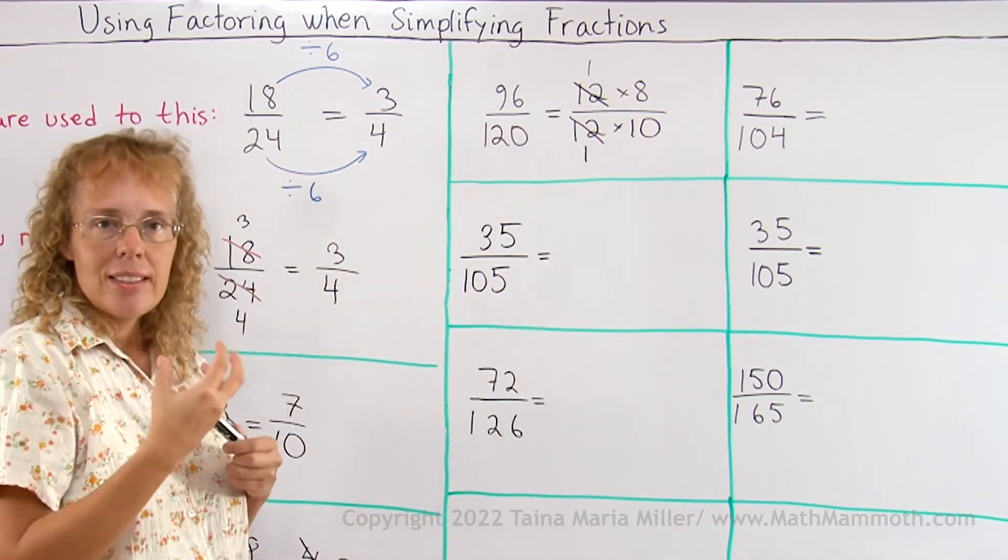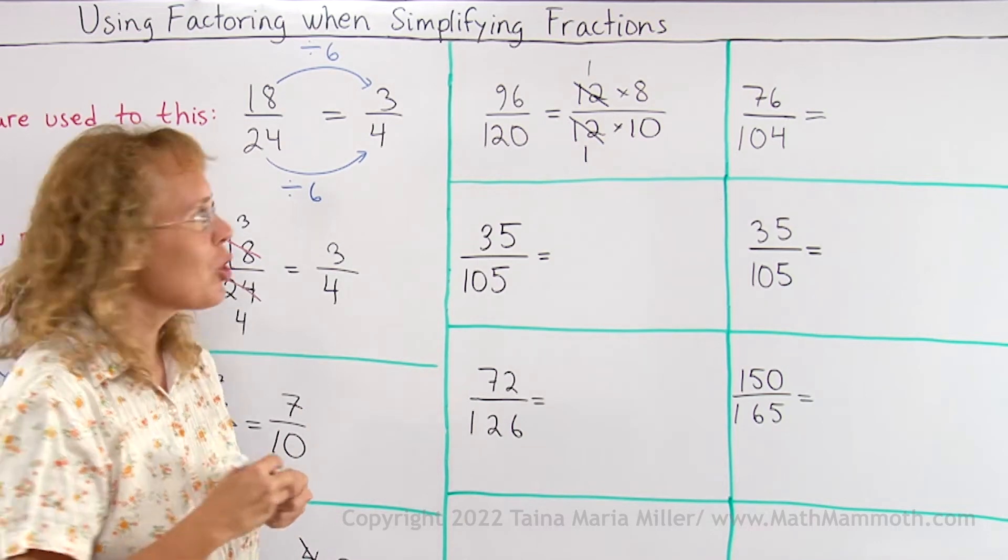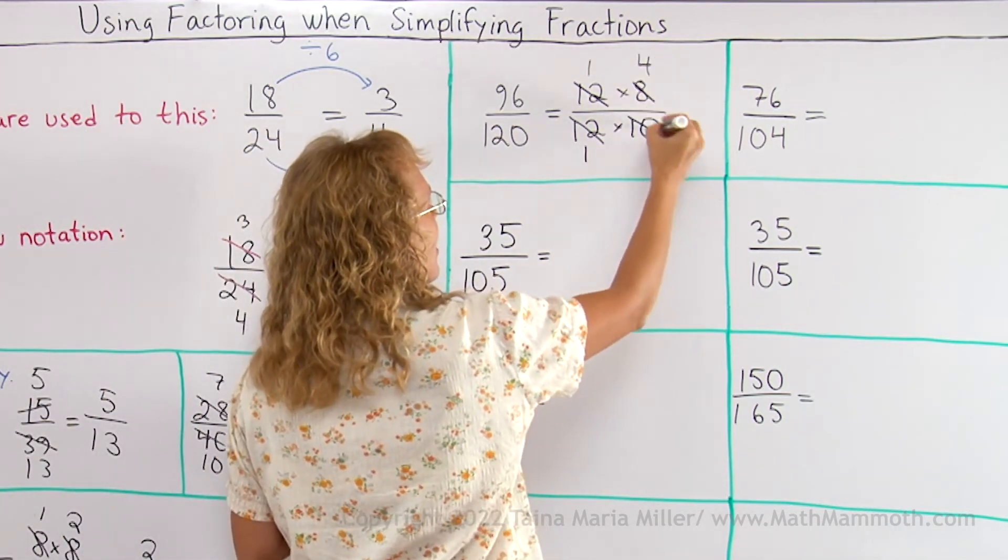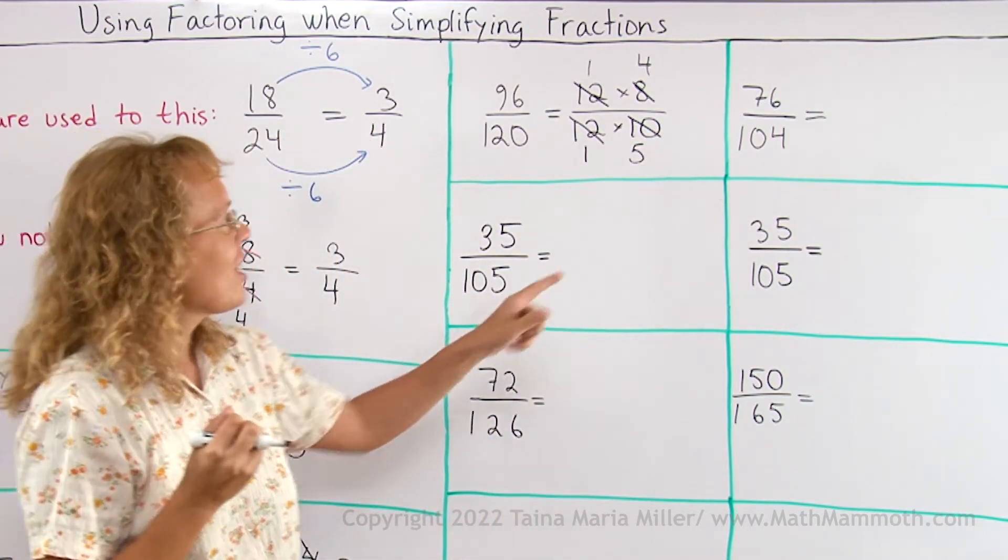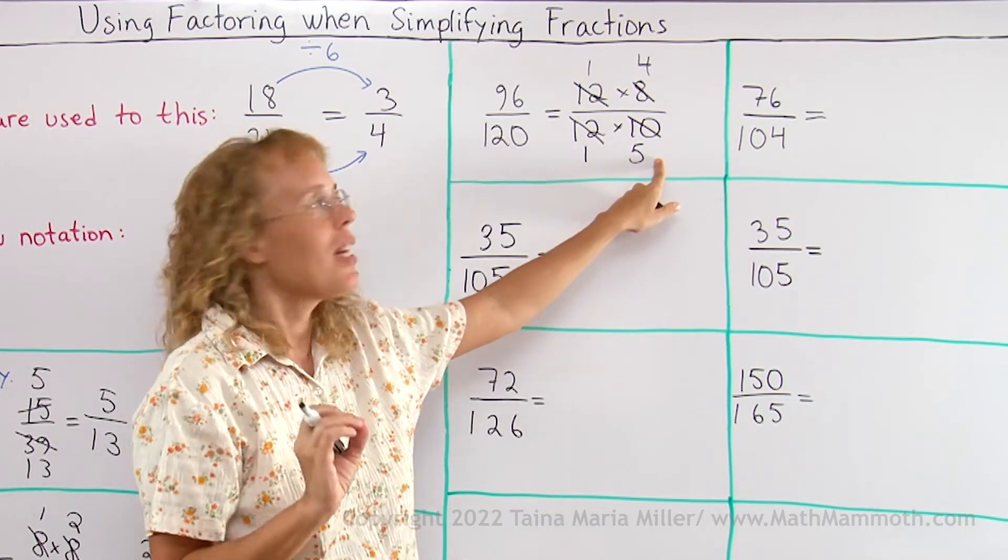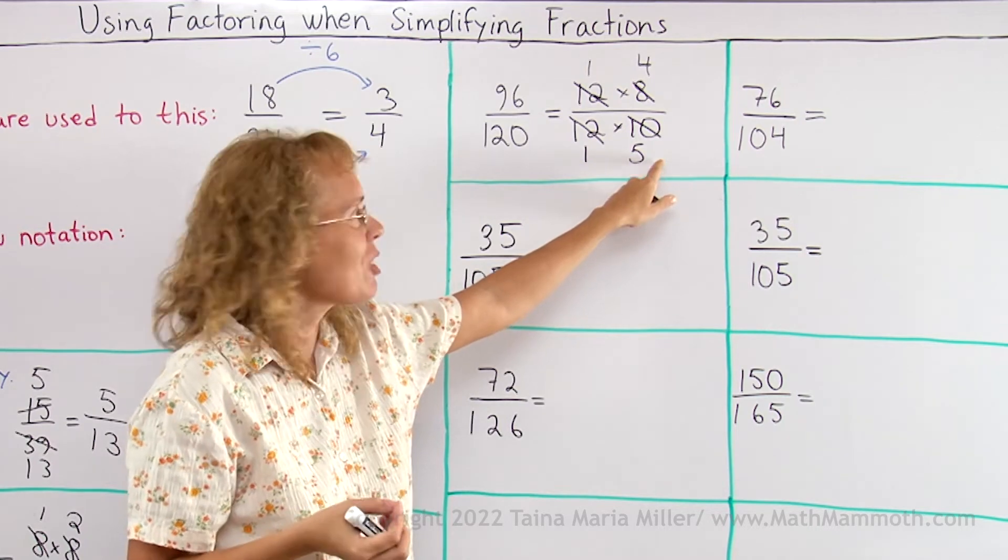And then 8 tenths is left, and both of those are divisible by 2. So 8 divided by 2 leaves 4 and here 5. You just have to be careful of not writing 2 here. You divide by 2, but you're not showing the 2 anywhere. Don't write 2 anywhere. Write what you get from the division: 5.